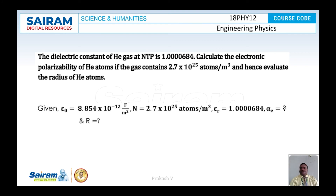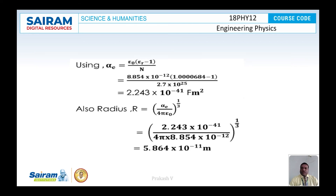Another problem: the dielectric constant of helium gas at NTP is 1.0000684. Calculate the electronic polarizability of helium atoms if the gas contains 2.7×10²⁵ atoms per meter cube, and hence evaluate the radius of the helium atom. Given: ε₀ = 8.854×10⁻¹² farad per meter square, n = 2.7×10²⁵ atoms per meter cube, and εᵣ = 1.0000684.